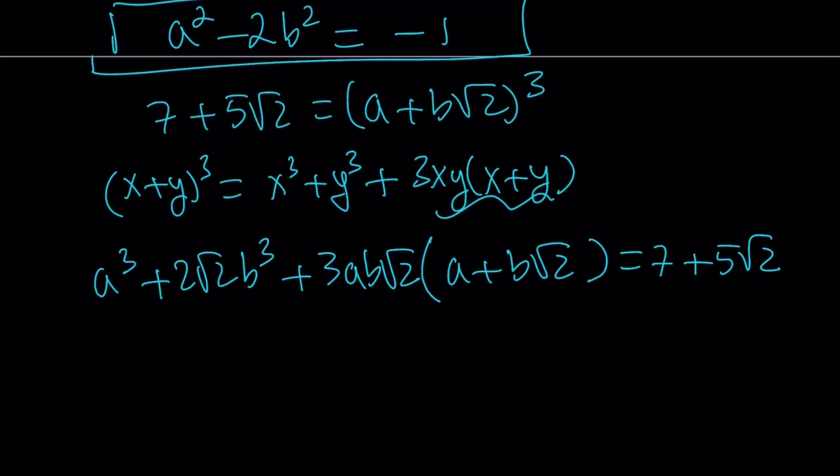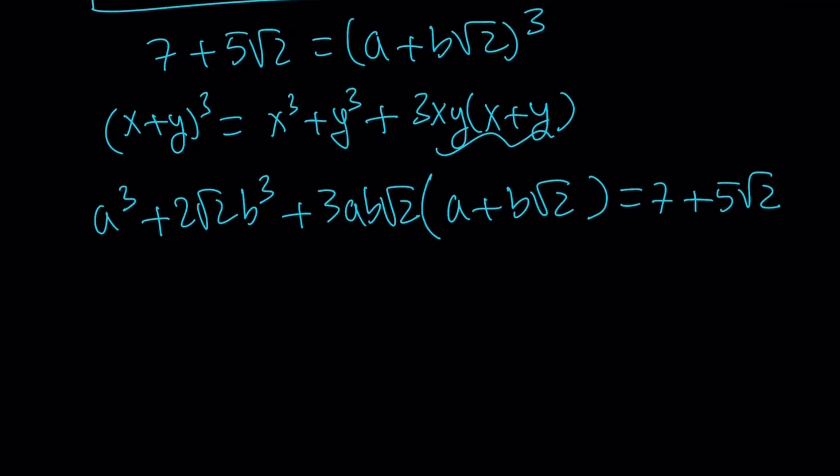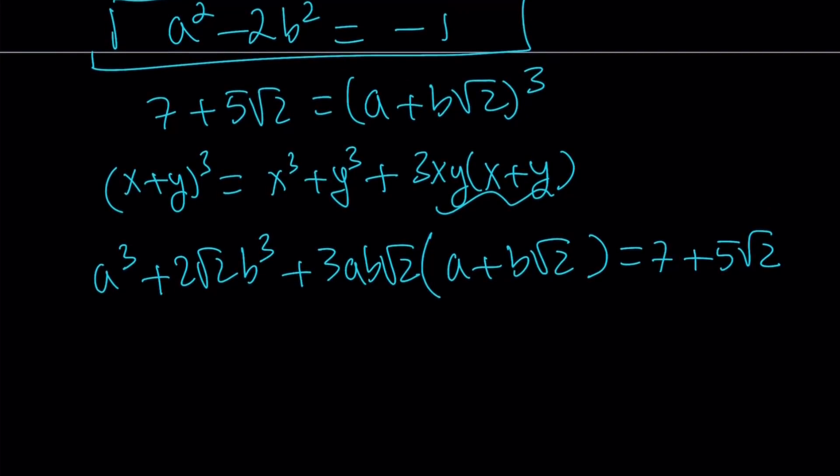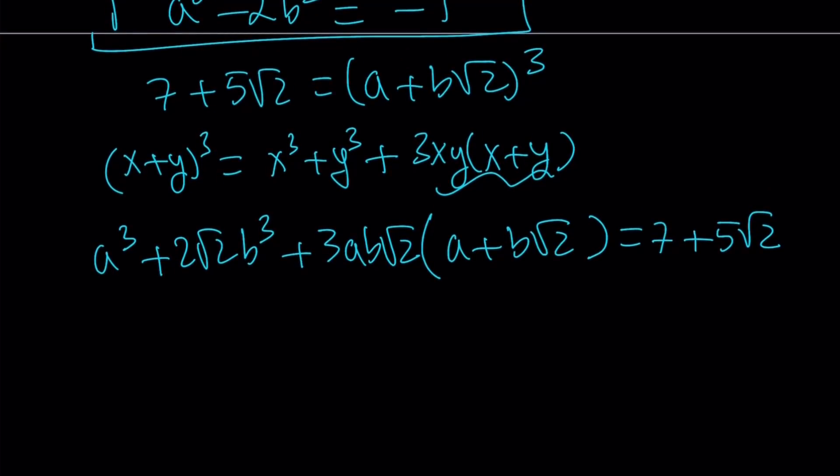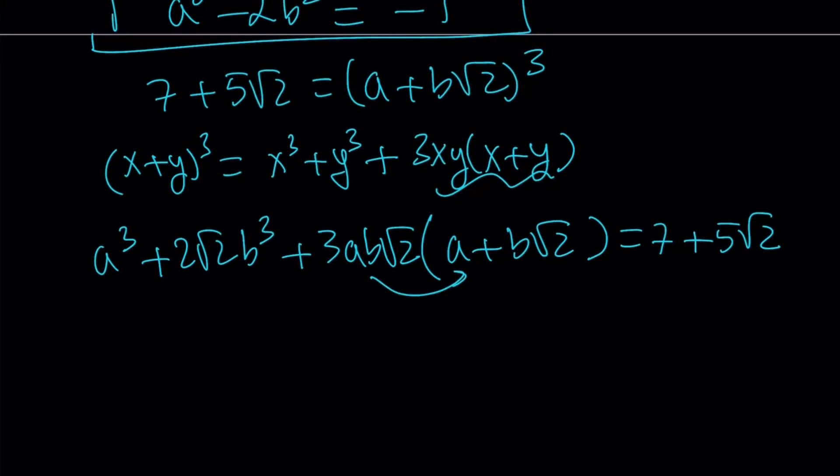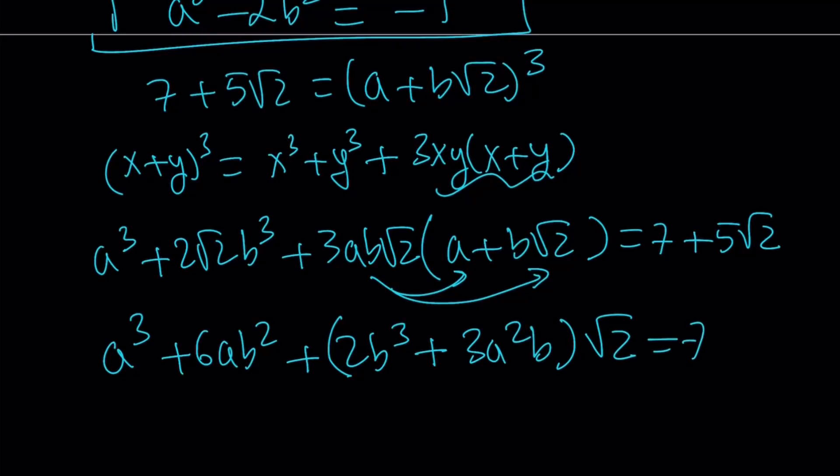Let's go ahead and organize this expression a little bit and now we're going to solve a system of equations from here. So this gives me the following. If I distribute I get a cubed and then the second one is going to give me 3ab squared times 2 which is 6ab squared. And then plus 2ab cubed multiplied by root 2 but I'm going to factor out root 2, plus 3a squared b, and that is multiplied by root 2. And that's going to equal 7 plus 5 root 2. This is equal to 7 plus 5 root 2 so I can safely say that this is equal to 7.